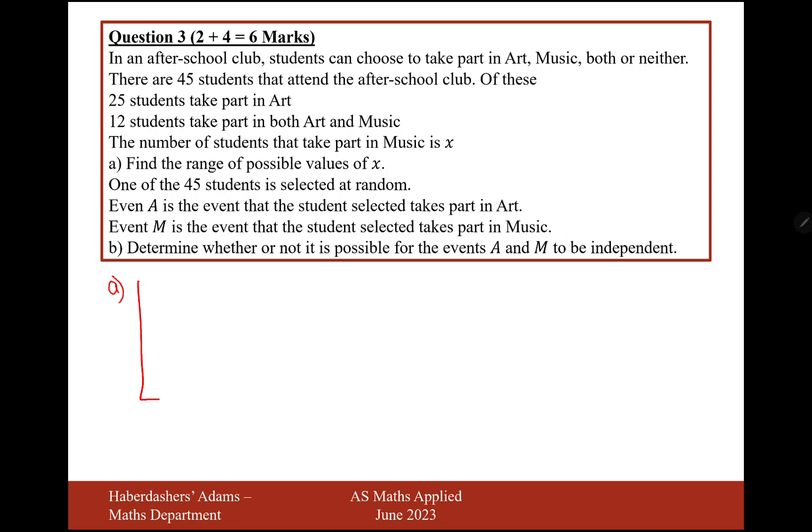Okay, a Venn diagram is screaming out at me at the moment, so let's draw some circles. We're going to have A and M. We want 12 students who take part in both. We want 25 students to take part in art, so that means that 13 students will fit in here. Because remember, it's the full circle that should add up to 25.